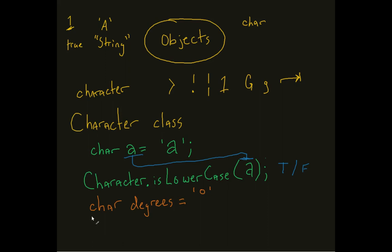But one of the other things we can say is character is letter, is letter or digit. And again, I replace it with my variable degrees. Is this going to be true or false? Well, the degrees symbol is not a letter. So this is going to produce something called false.